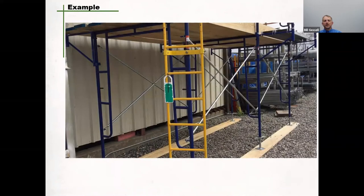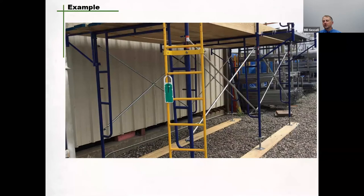When it is all done, a scaffold that has proper sills and materials underneath to provide stability and strength, ensuring it remains level and doesn't sink into the ground, looks like this: appropriate sills placed underneath consecutive supports and the use of adjustable screw jacks to ensure you can get a proper plumb and level scaffold.